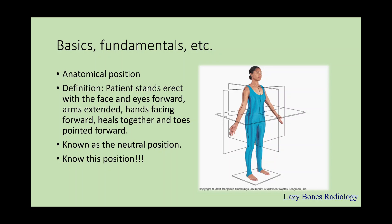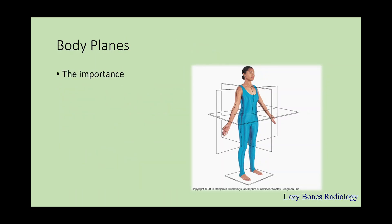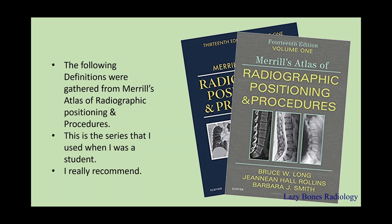Using the anatomical position, we are able to subdivide the body using imaginary planes. These imaginary planes help us see the body in a more detailed way by slicing the body in different directions to identify structures in respect to how they are positioned in the body. There are four main types of body planes: sagittal, coronal, horizontal, and oblique. The following definitions were gathered from Merrill's Atlas of Radiographic Positioning and Procedures, a series I used as a student and highly recommend.